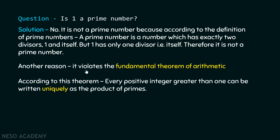Another reason could be that one violates the fundamental theorem of arithmetic. According to this theorem, every positive integer greater than one can be written uniquely as the product of primes. This simply means if we have a positive integer greater than one, then we can write that positive integer as a product of primes, and that too uniquely.